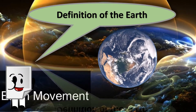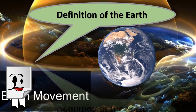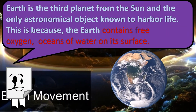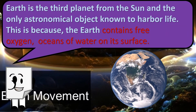Definition of the Earth: Earth is the third planet from the Sun and the only astronomical object known to harbor life. This is because the Earth contains free oxygen and oceans of water on its surface.